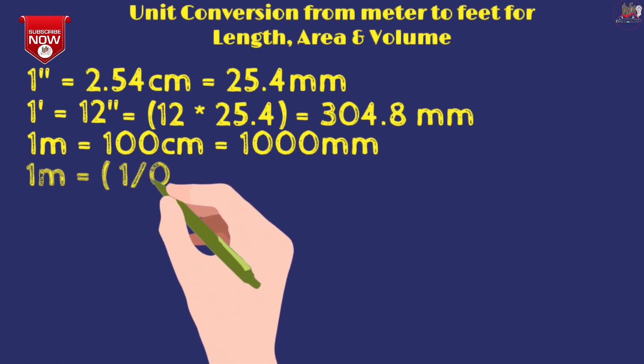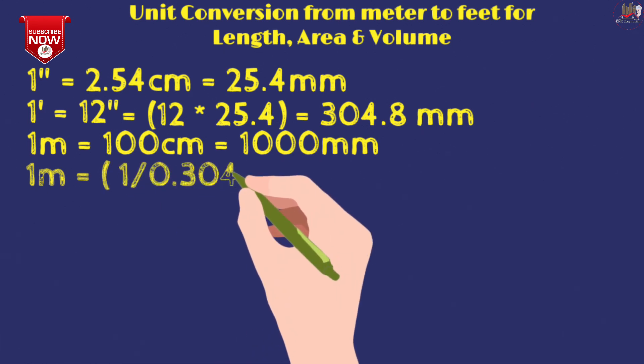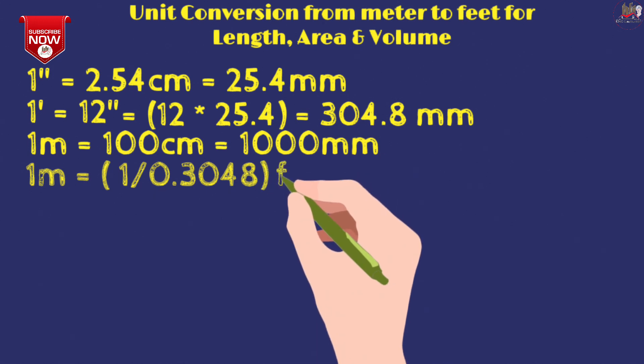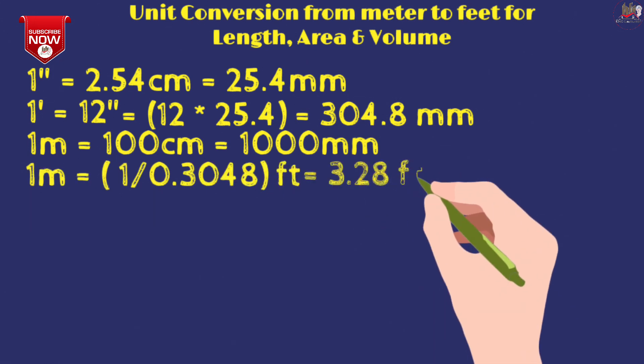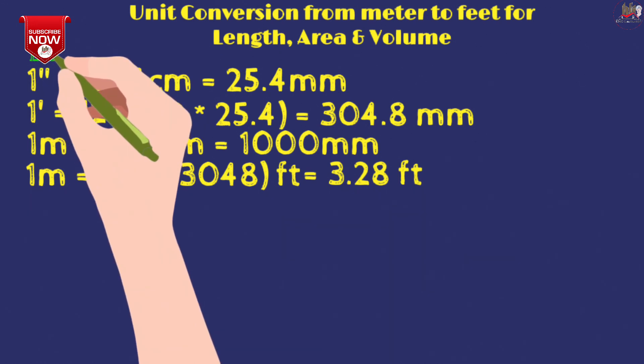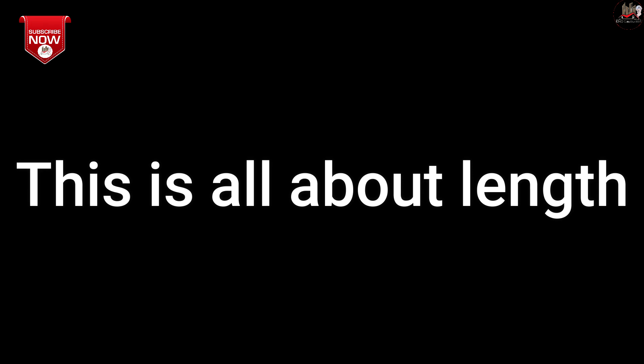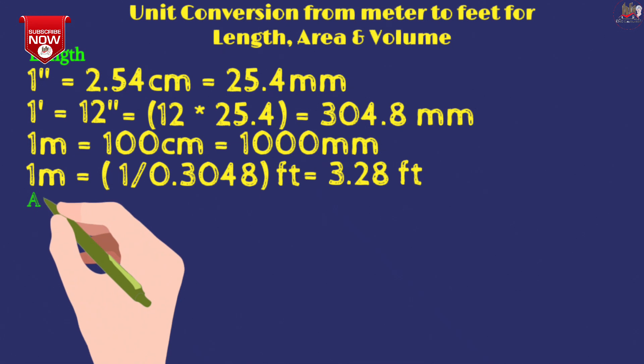So 1 meter equals 1 divided by 0.3048 feet. This will come to 1 meter is 3.28 feet after calculation. If we divide this value, then this comes to 3.28 feet. This is all about length.